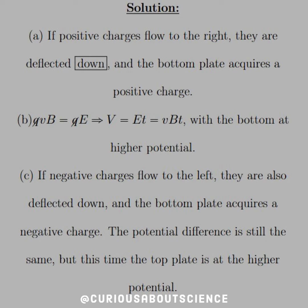For Part A: if the positive charges flow to the right, they are deflected downward. We know that from the force equation. And the bottom plate acquires the positive charge.